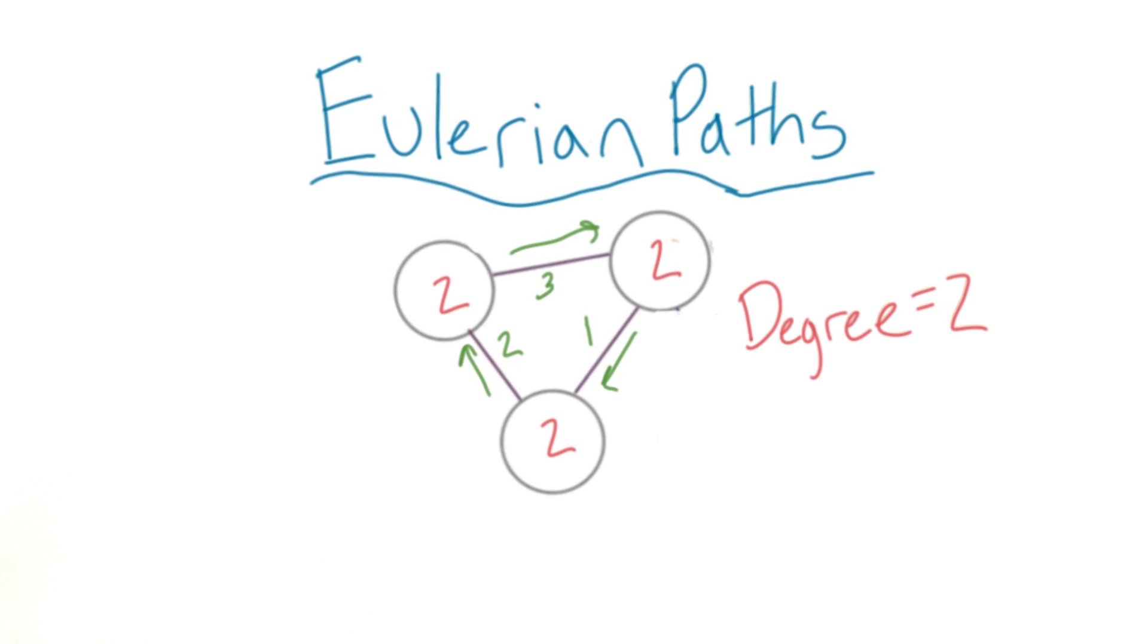There's a nice trick here. Our good friend Euler said that graphs can only have Eulerian cycles if all vertices have an even degree, or an even number of edges connected to them.